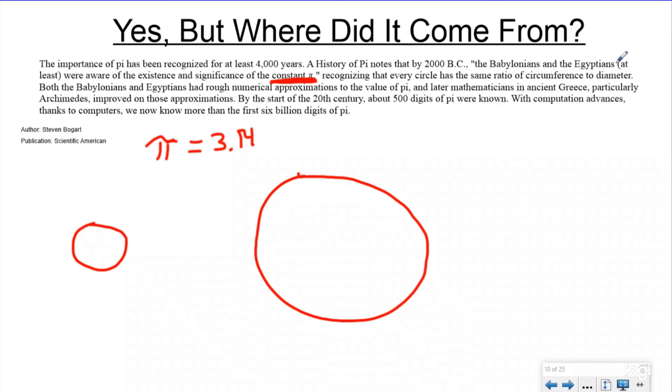Now, both of them approximated what it was. And later mathematicians in ancient Greece, particularly Archimedes, improved on those. So what Archimedes did is he was like, okay, wait a minute. I know that there's a relationship between the diameter and the circumference. I can visually see it. But how do I figure out what that ratio is? How do I figure out what that relationship is?